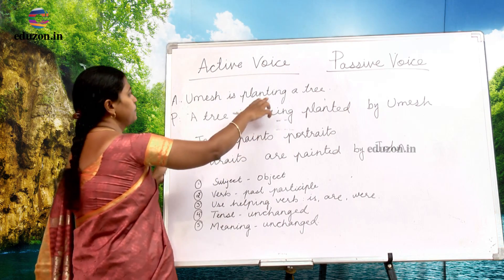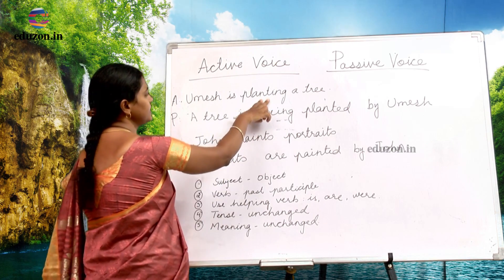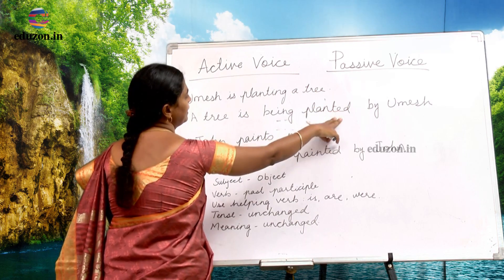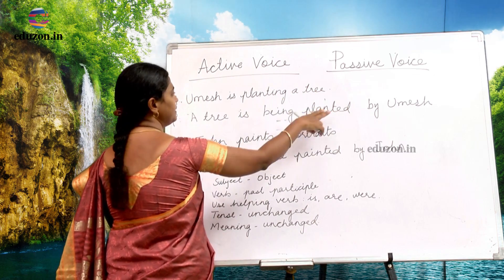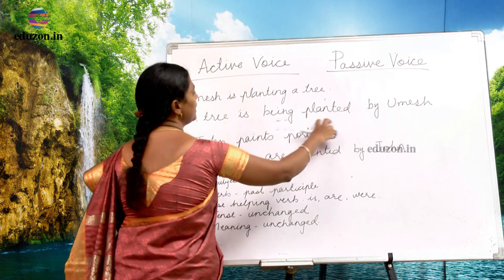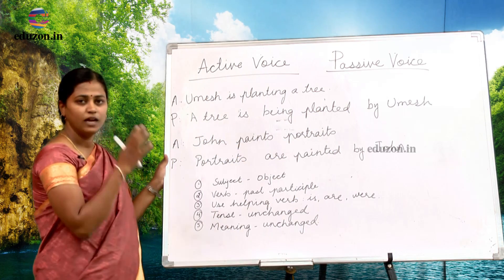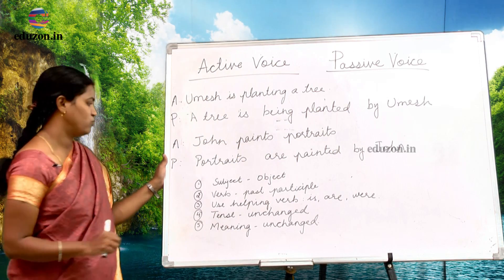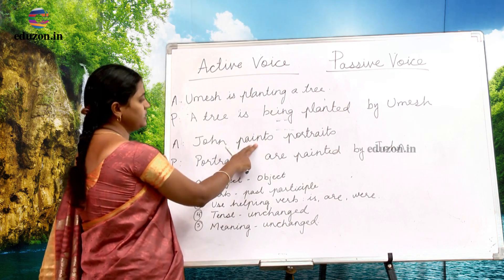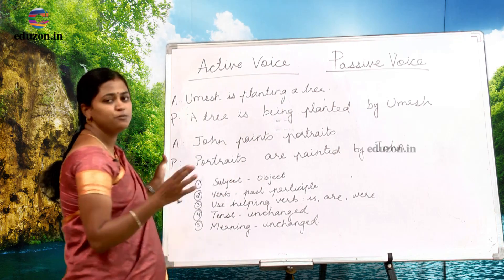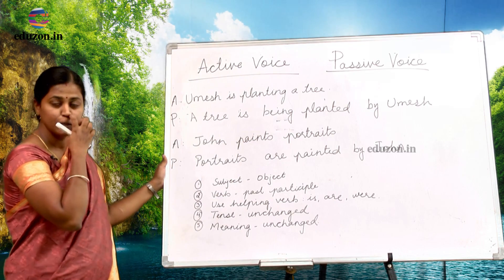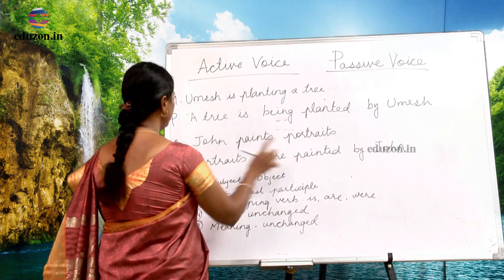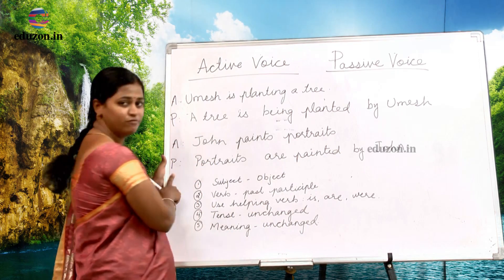The second rule: the verb changes to its past participle form. For example, if the action is 'planting,' then: plant → planted → planted. Planted is the past participle and that is used in passive voice. Similarly, paint → painted → painted. So 'painted' becomes the verb in passive voice.